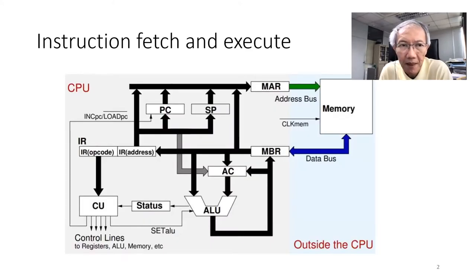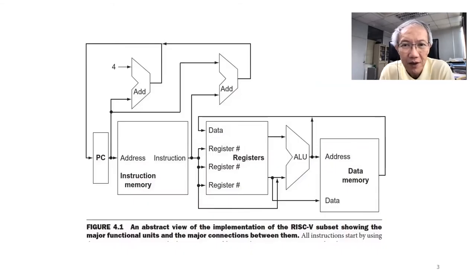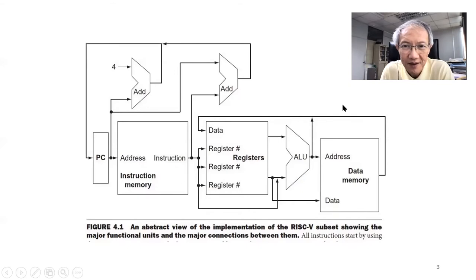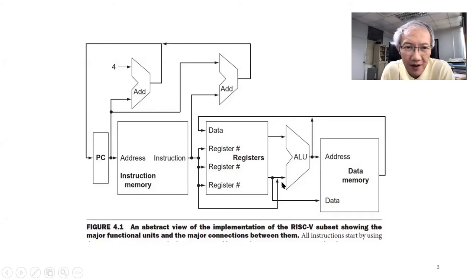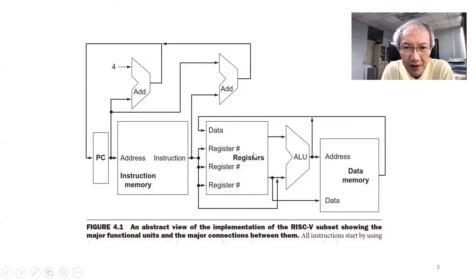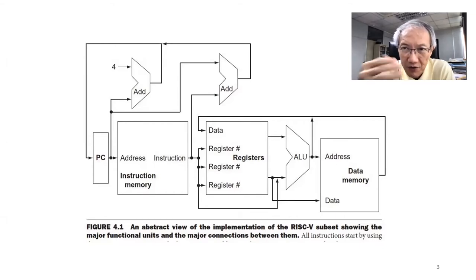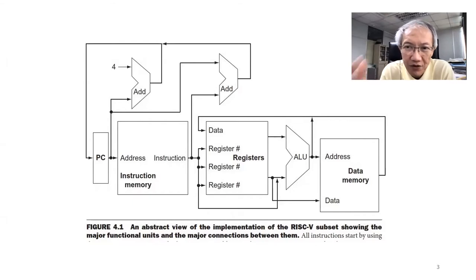What we will end up today is something like this — a block presentation of the processor. The first block is the instruction memory, where you can read your program from. Then you have the register file; there are 32 registers. And then you have one arithmetic logic unit which can perform arithmetic: add, subtract, and then comparison, logic functions, and branch functions.